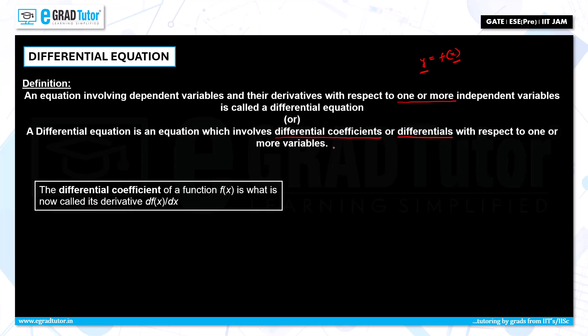What is a differential coefficient? For example, you take a function f of x. The differential coefficient of f of x is nothing but the derivative, d of f of x by dx. This is a simple understanding so that as a first step we will be in a position to start solving problems in differential equations.